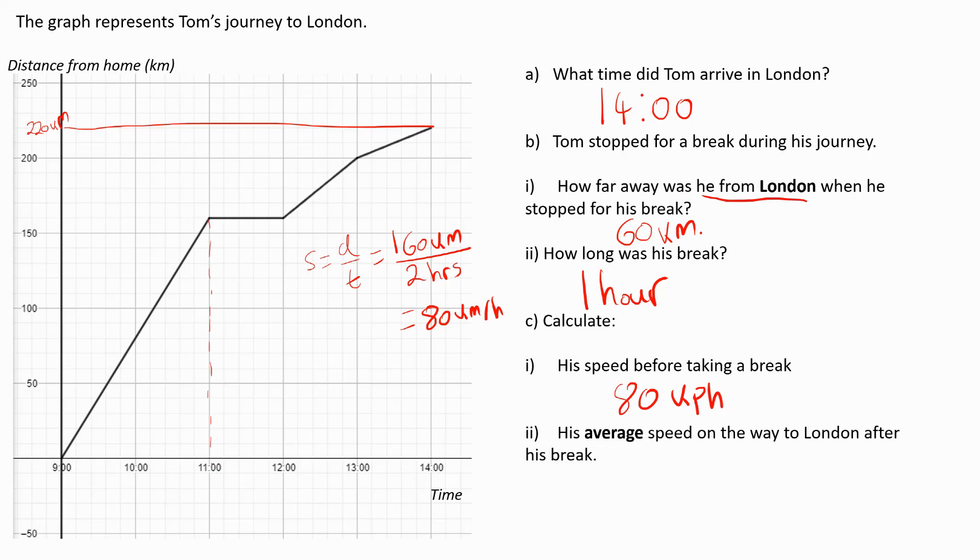His average speed on the way to London after taking his break. To work this out, I need to consider the total distance travelled after he takes his break, from here to here. I can see that that is a distance of 60 kilometres. And the total time for that period is from 12 till 2, which is 2 hours. So the average speed is going to be total distance of 60 kilometres divided by total time of 2 hours, which gives us 30 kilometres per hour.